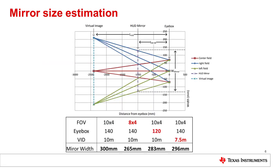This graph shows the relationship between iBox size, mirror size, and virtual image distance in the horizontal dimension. We can see that by changing the FOV or iBox size specifications, the mirror size is significantly changed, but when the VID is reduced from 10 meters to 7.5 meters, the mirror size remains almost unchanged.